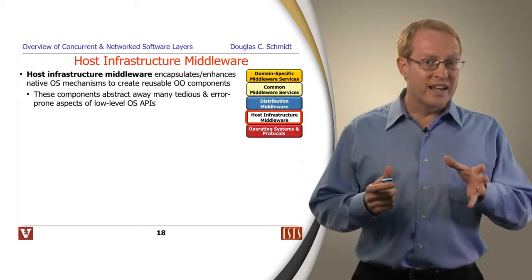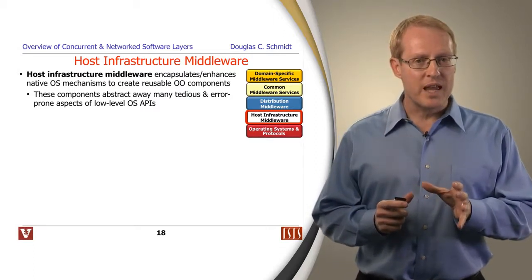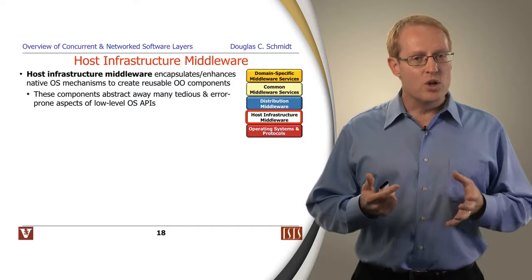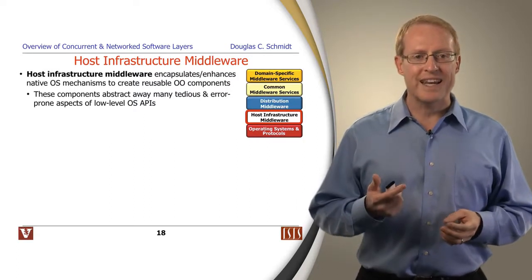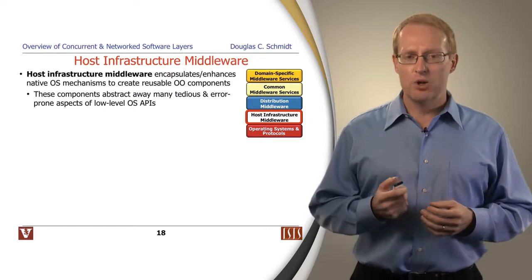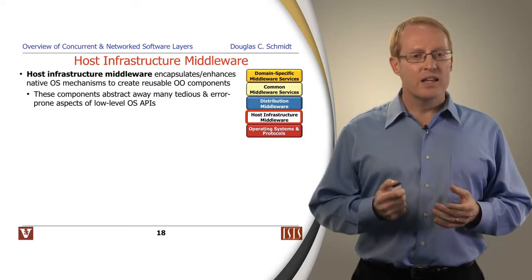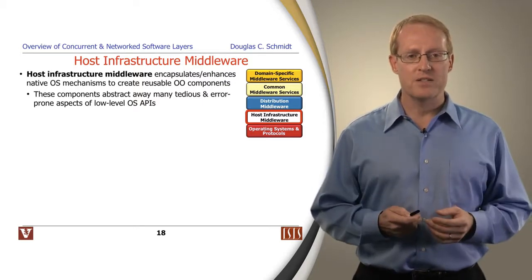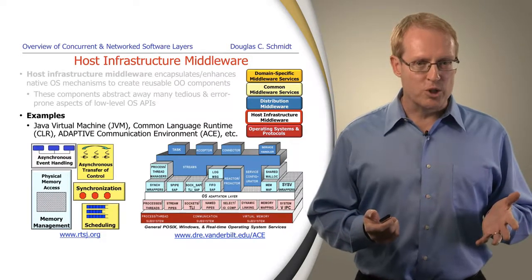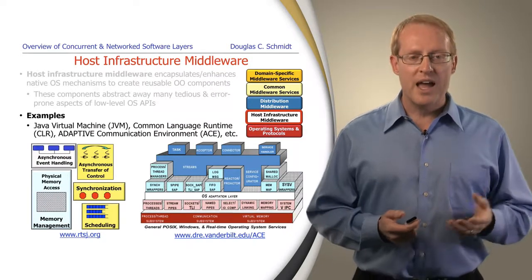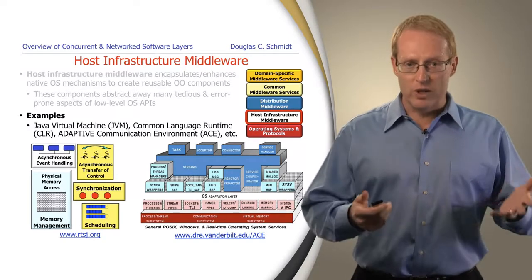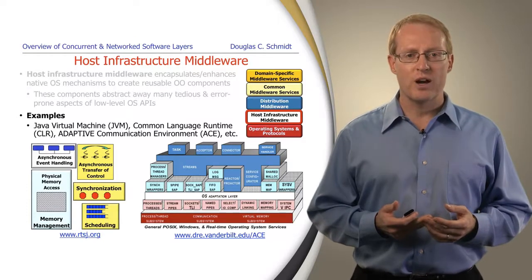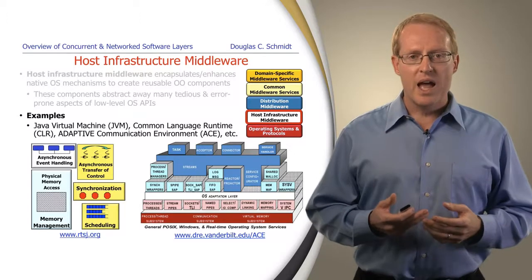So host infrastructure middleware encapsulates and enhances native operating system mechanisms to create reusable object-oriented components that abstract away from many of the tedious and error-prone aspects of these low-level system interfaces. There's a wide range of host infrastructure middleware that you are probably familiar with — the Java Virtual Machine, Real-Time Java, the Common Language Runtime from Microsoft. Those are some examples that abstract away from the details of the operating system.